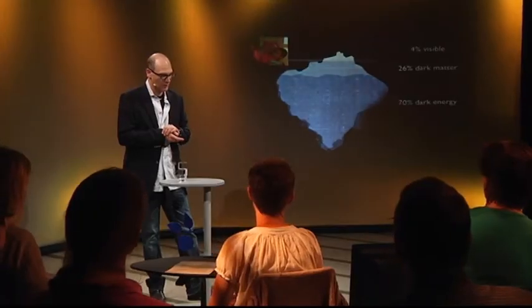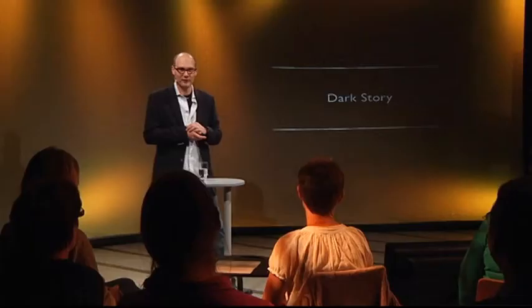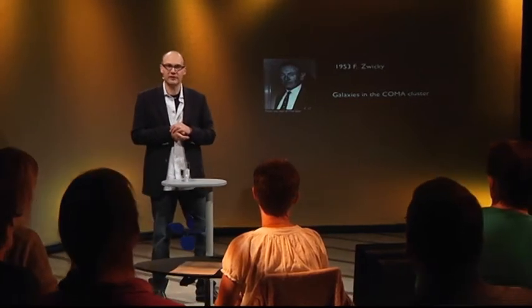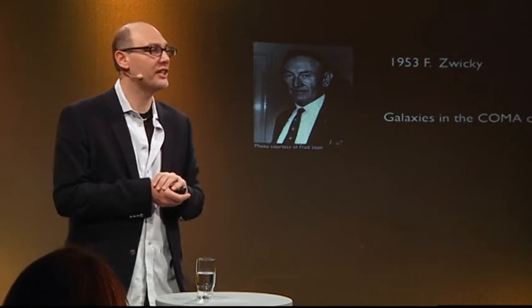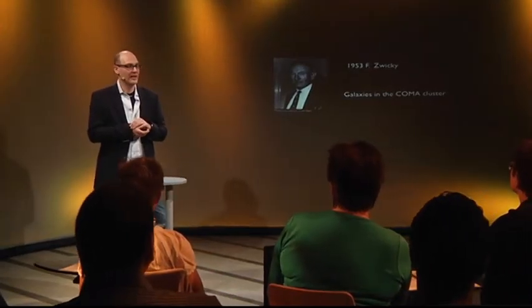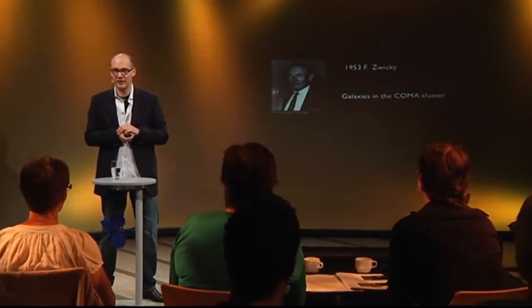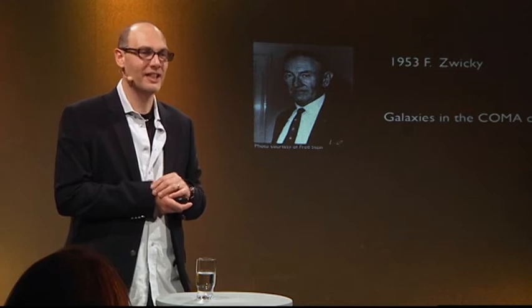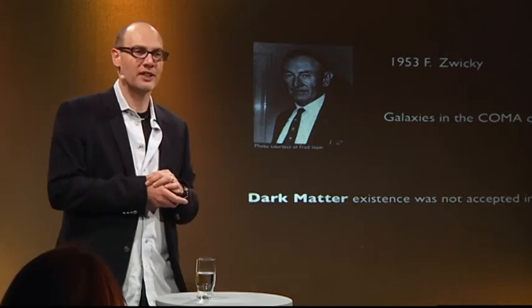Behind dark matter there is a dark story. When was dark matter thought of? It was thought to exist already in 1933 by Frank Zwicky, by looking at how the velocity of the galaxies in a big cluster of galaxies, called the Coma cluster, would move. When he was looking at the motion of the galaxies, he realized that the motion was not consistent with the amount of bright matter you would see inside the Coma cluster. And therefore he dubbed the unseen matter dark matter. But nobody believed it.